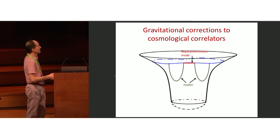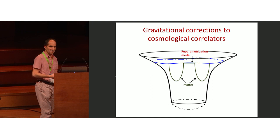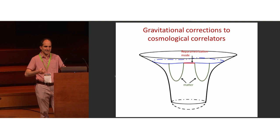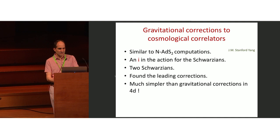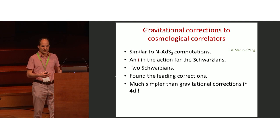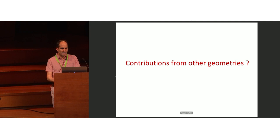Similarly, we can consider matter fields propagating in DS2 and compute gravitational corrections by considering propagators of the Schwarzian mode. This encodes various effects: for example, if you create a massive particle it will make the universe expand a little slower, and a second correlator in the presence of that will have a different form. All such effects are taken into account by this type of correlator. These computations are very similar to the ADS2 computations, with just an extra i in the action for the Schwarzians and two Schwarzian modes. It is certainly much simpler to compute gravitational corrections here than in four-dimensional gravity, and it may be useful for answering questions about infrared effects in gravity.